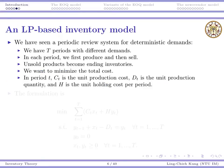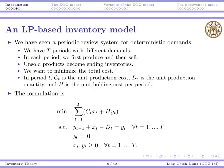There is actually one inventory model we have already seen in linear programming — let me remind you. Suppose we have T periods with different demands. Each demand has been determined and must be satisfied. In each period, we first produce and then sell; unsold products become ending inventory, and we want to minimize the total cost. This problem should be somewhat familiar to you.